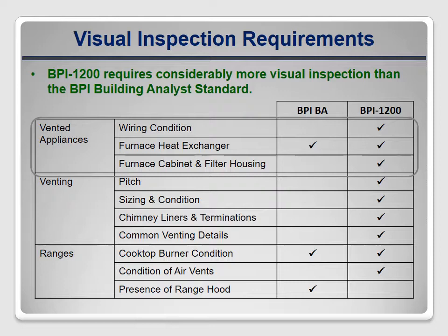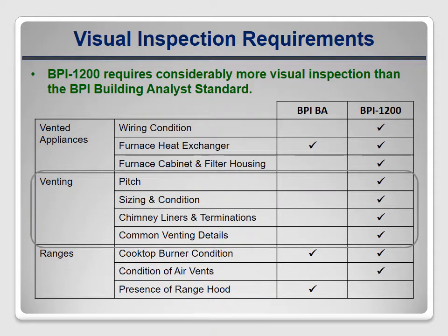BPI 1200 requires a detailed assessment of the venting system, including pitch, supports, sizing, condition, and appropriate handling of common vents shared by multiple appliances. None of this is mentioned in the BA Standard, though as mentioned earlier, it is implied in other BA documents.